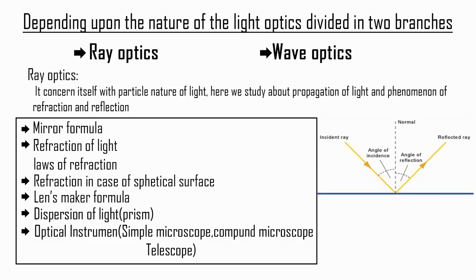Ray optics concerns itself with the particle nature of light, and deals with propagation of light and phenomena of reflection and refraction. Here we also discuss the mirror formula for spherical mirrors, refraction of light, laws of refraction, refraction in case of spherical surfaces, lens maker formula, dispersion of light through a prism, and optical instruments — including simple microscope, compound microscope, and telescope.